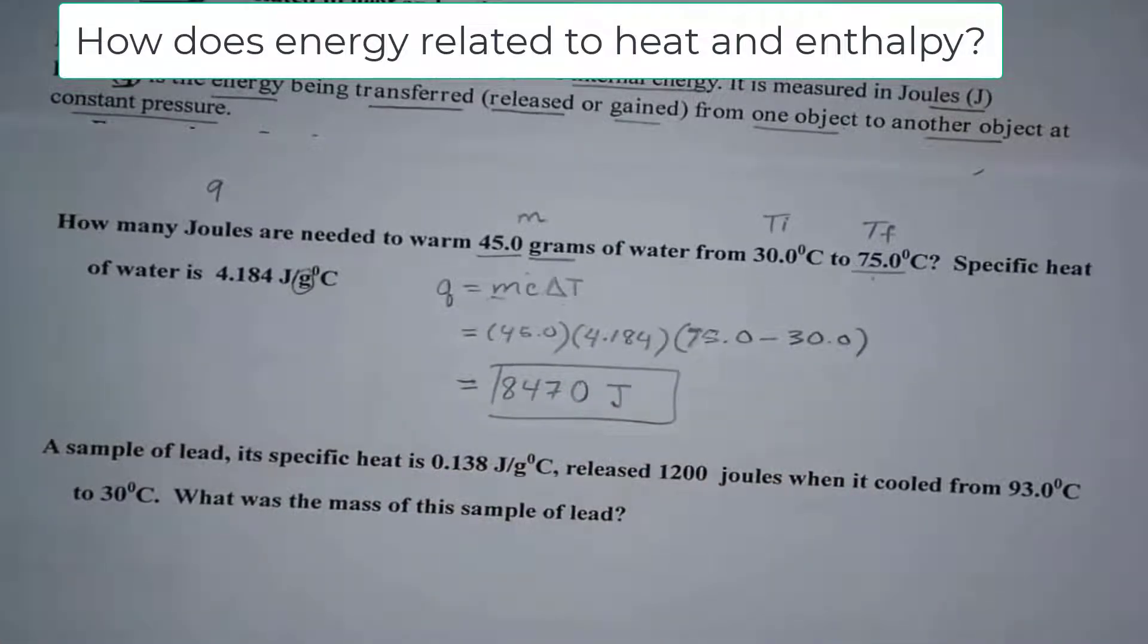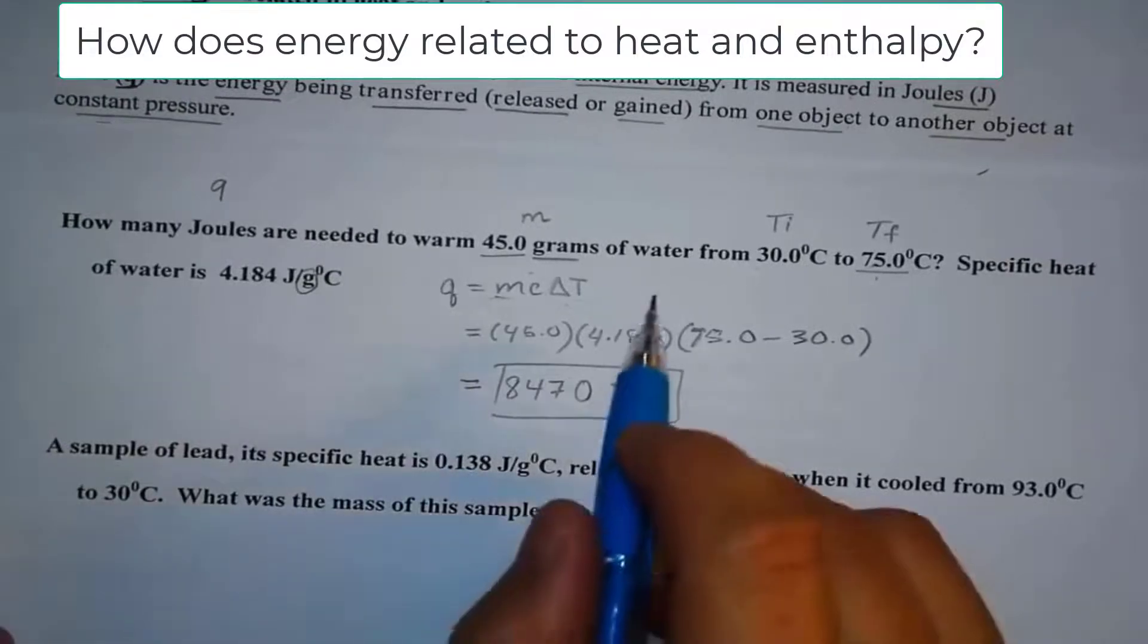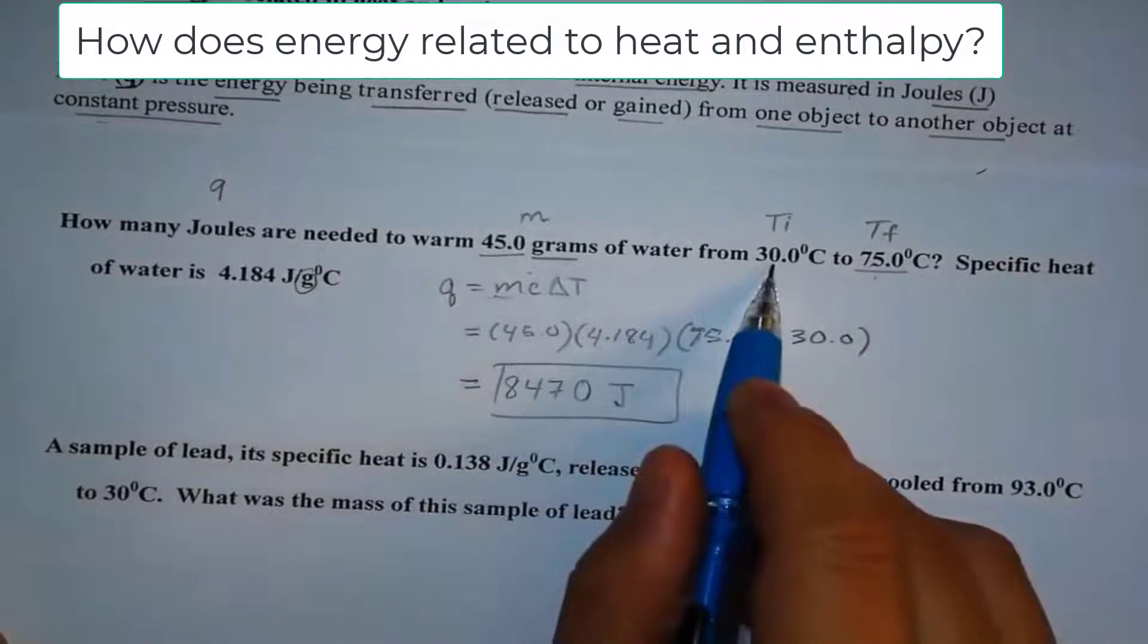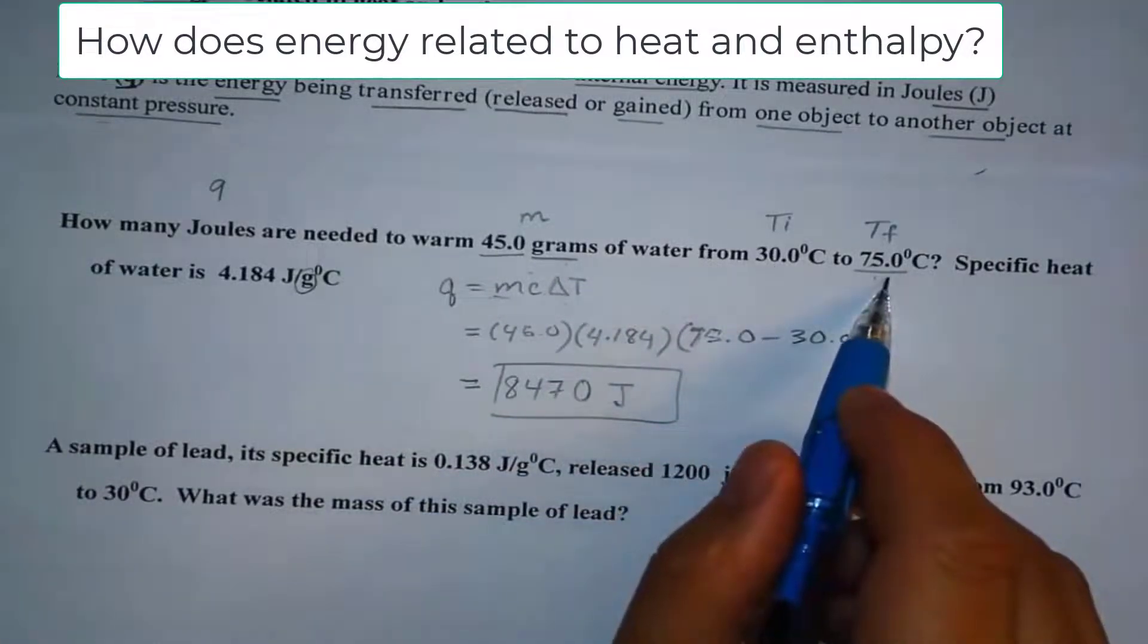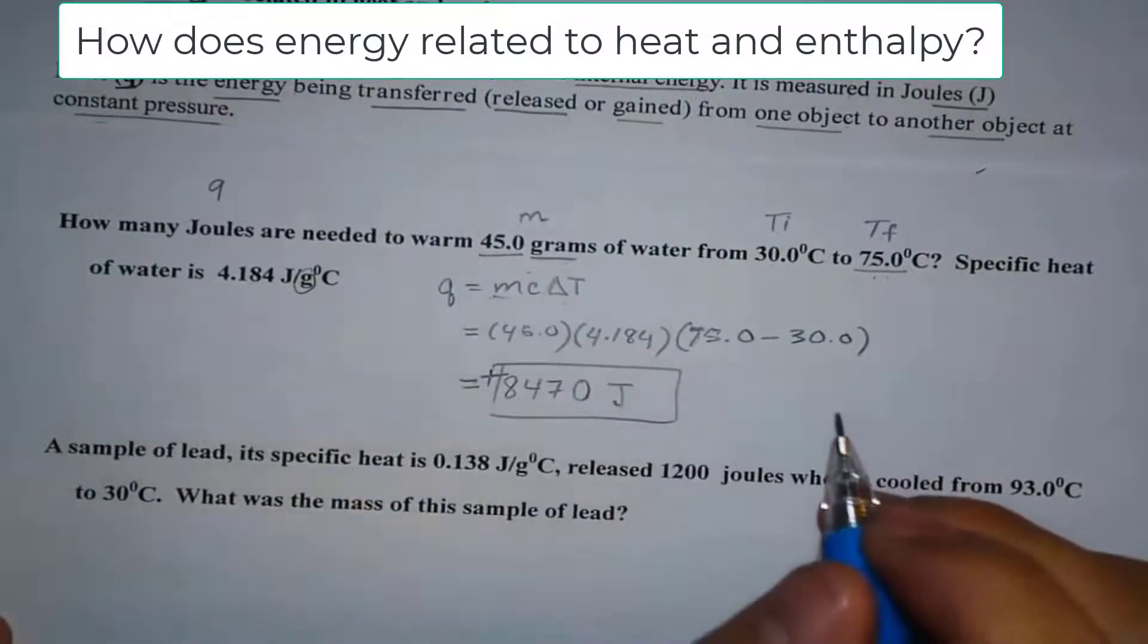Now in this case, what happened to the system? Is it gaining or losing energy? Well, let's look at this water. It's starting from a very cold temperature of 30 degrees. And it gets really hot to 75. So the only way that's possible is by gaining energy.